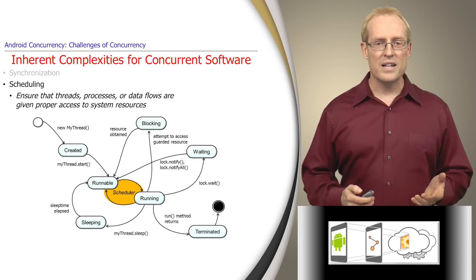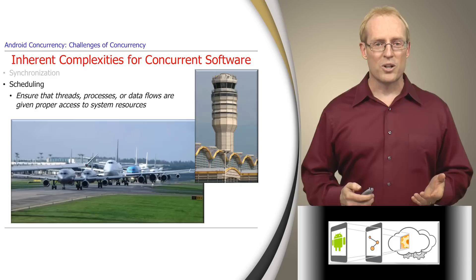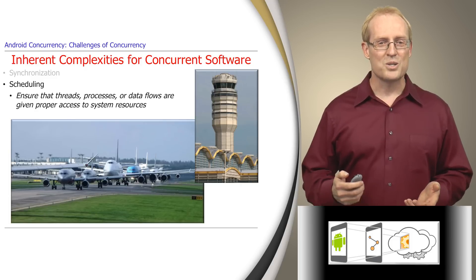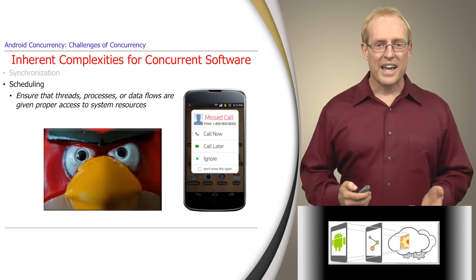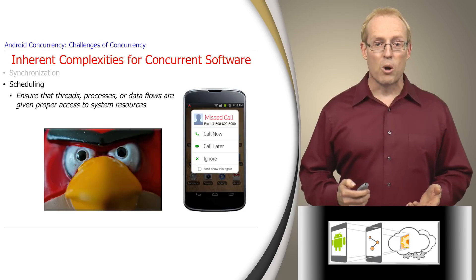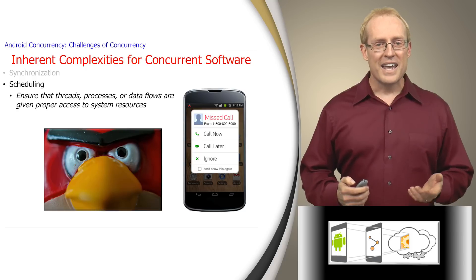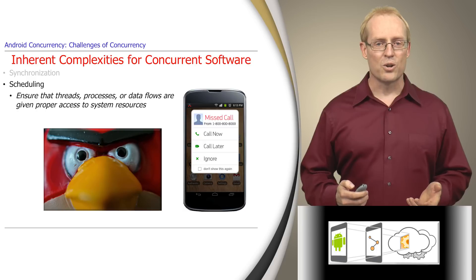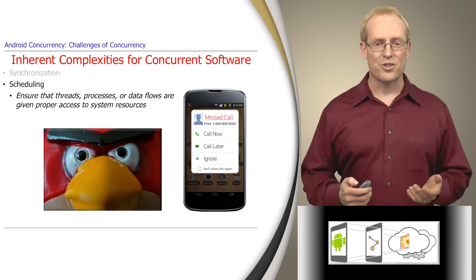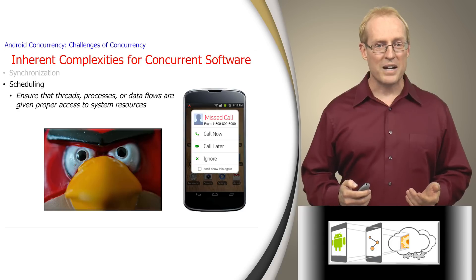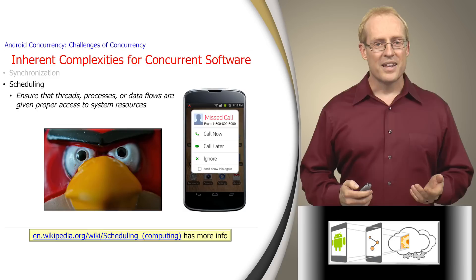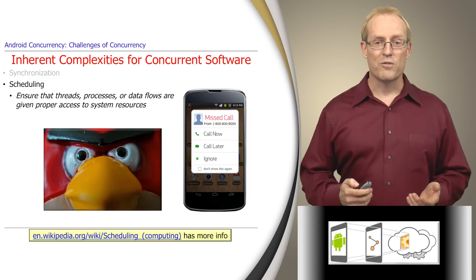Scheduling ensures that threads, processes, or data flows are given proper access to system resources. For example, air traffic controllers need to schedule the arrival and departure of airplanes based on limited resources such as gates and runways. Likewise, Android's scheduler needs to ensure that an emergency call isn't missed because the user is playing the Angry Birds game on the phone. Getting all this right is tricky since there are many states to manage in concurrent programs, and it's hard to keep track of them to ensure your software does the right thing at the right time under both expected and unexpected conditions.